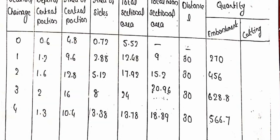The total sectional area at each station is the sum of the central area and the side area: 4.8 + 0.72 = 5.52; 9.6 + 2.88 = 12.48; 12.8 + 5.12 = 17.92; 16.0 + 8.0 = 24.0; 10.4 + 3.38 = 13.78 square meters.